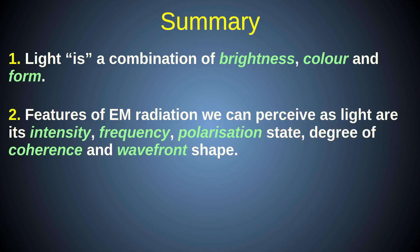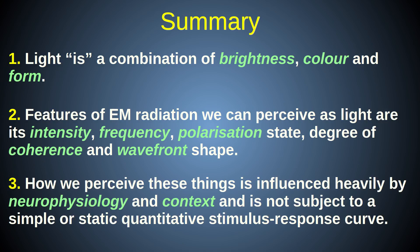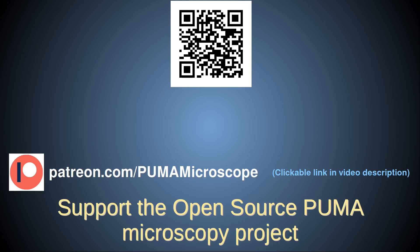The light we perceive via our eyes is related to certain characteristics of the EM wave field received by our visual system: namely its amplitude, frequency, polarisation state, degree of coherence, and the shape of the wavefront. It is related to those things — not directly proportional to them. The relationships between EM radiation features and perceived light are not direct, simple, linear, constant, or absolute, because visual perception is influenced strongly by many other factors. If you liked this video please hit the thumbs up, subscribe to the channel, and consider supporting the project via Patreon, where you'll find additional content and early bird access to future videos.